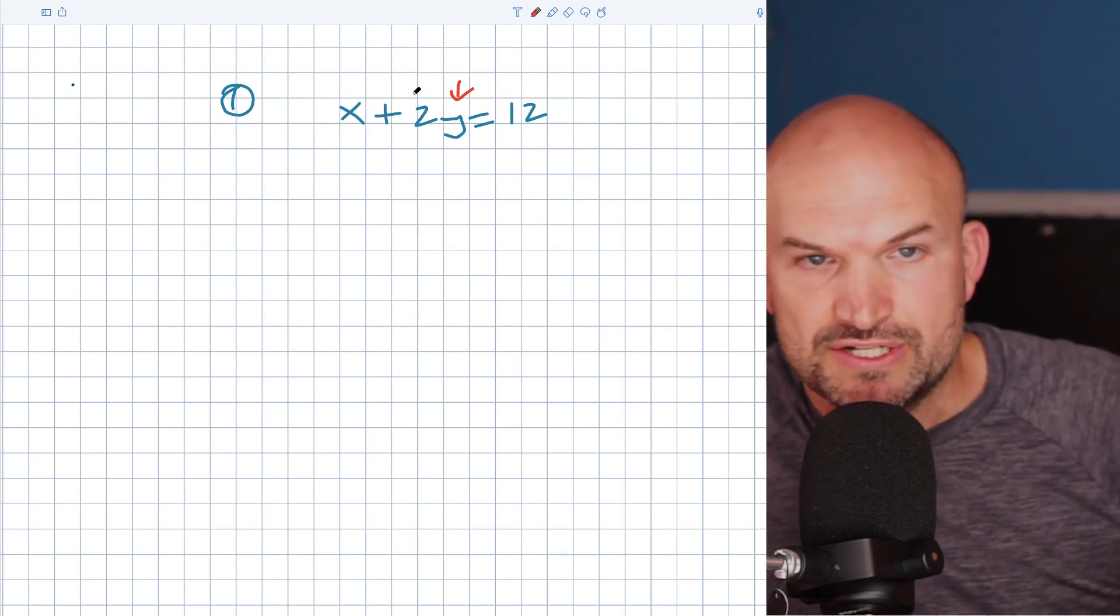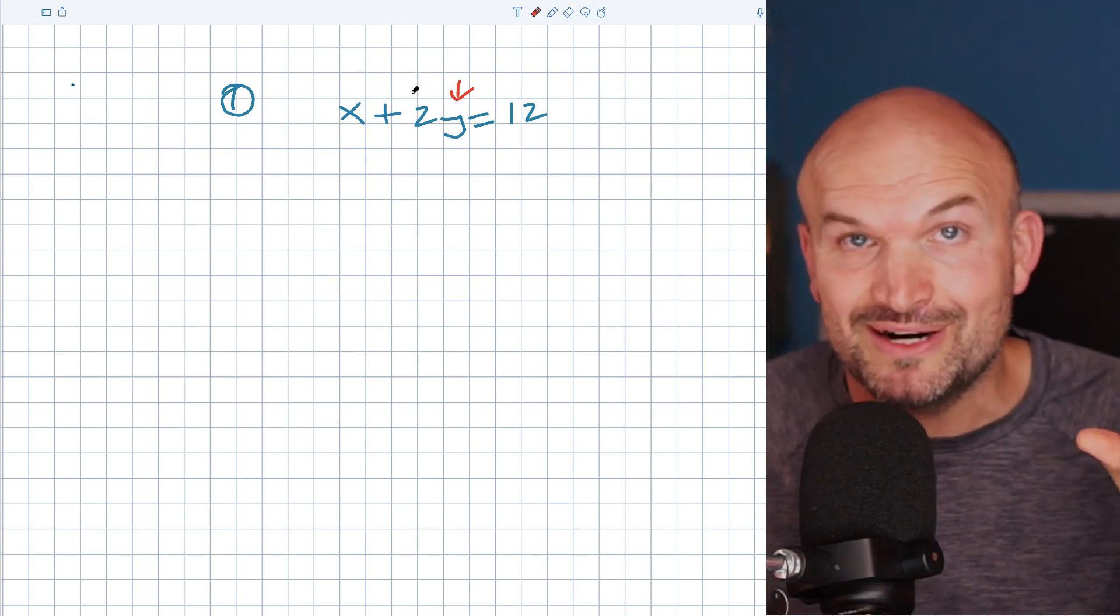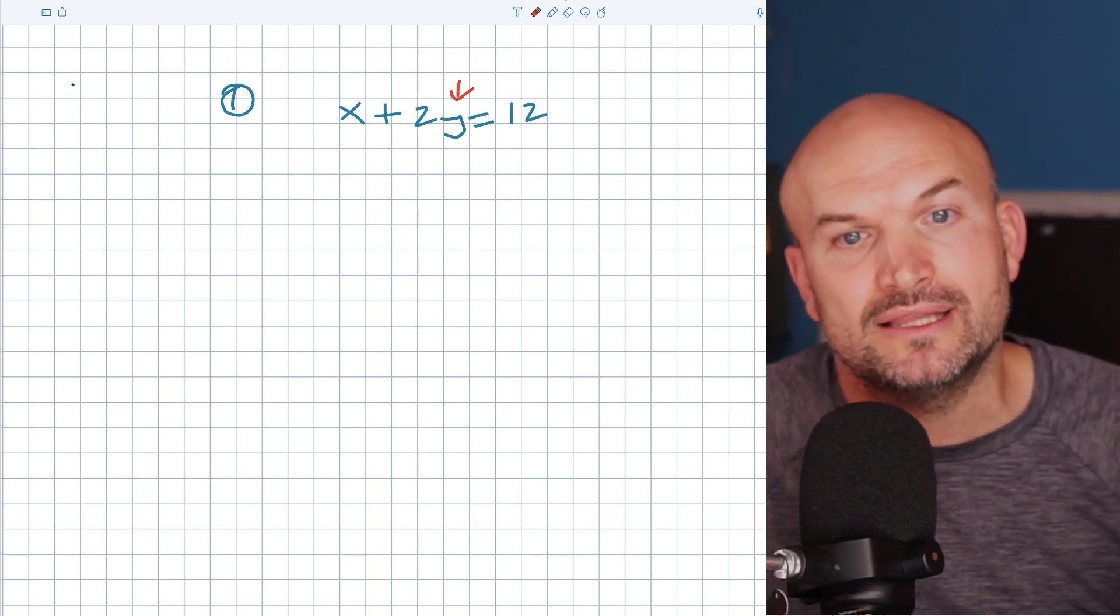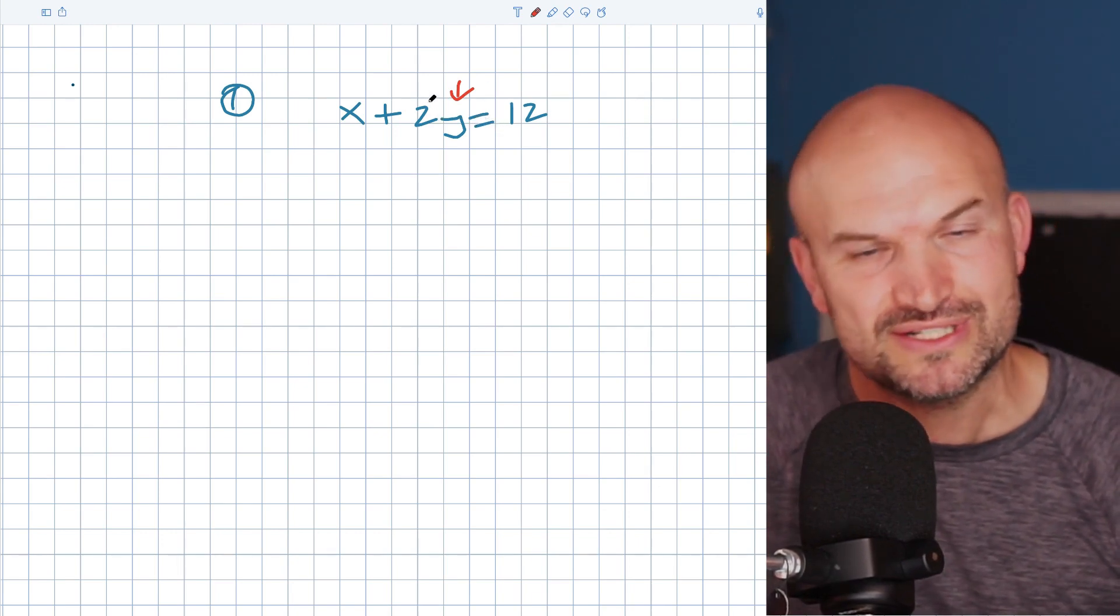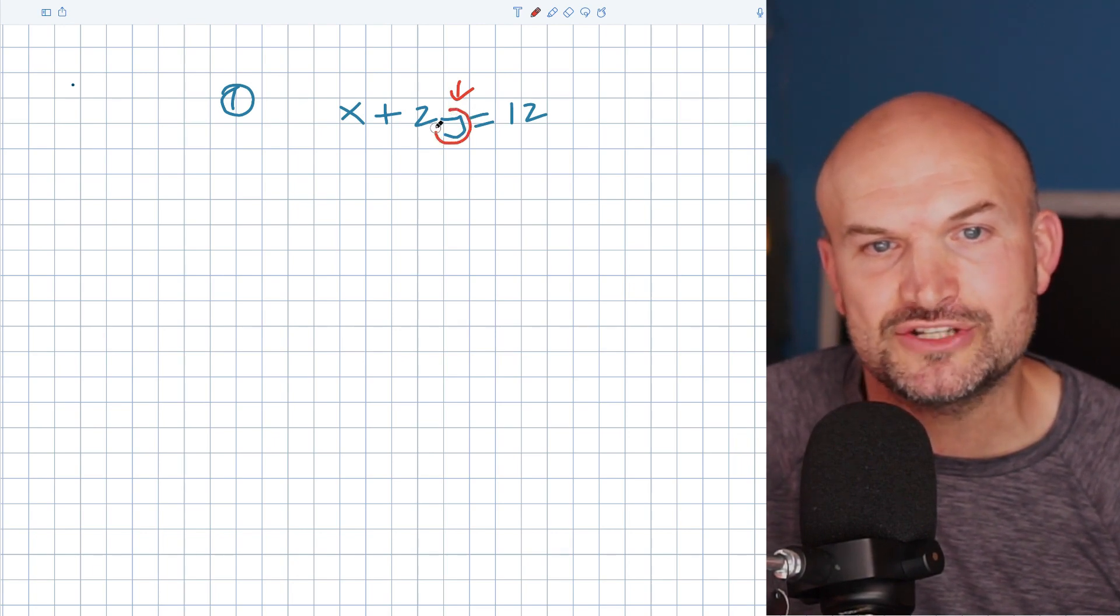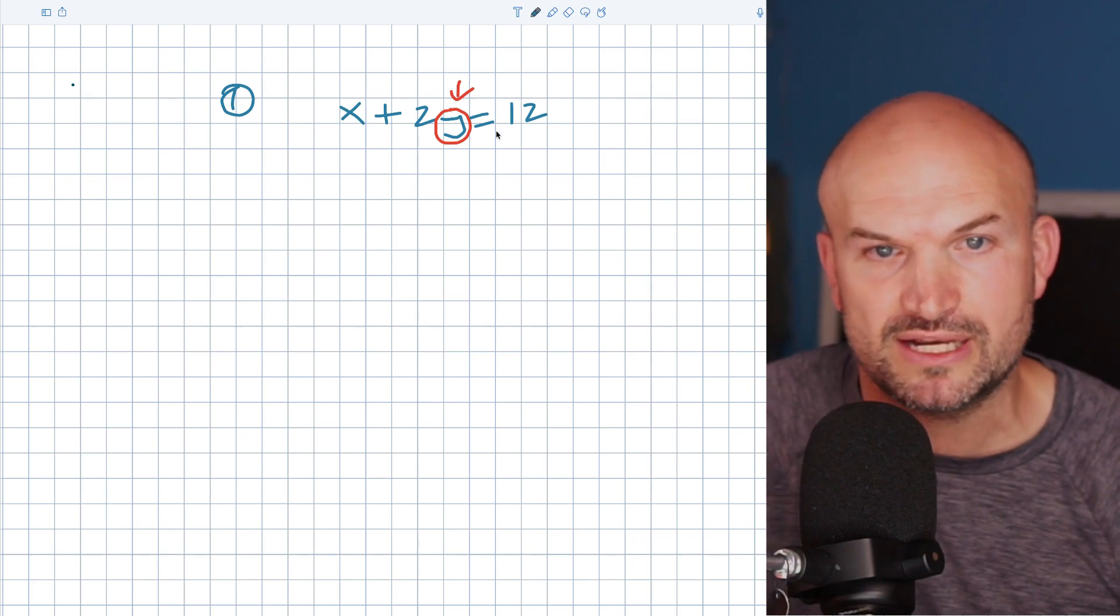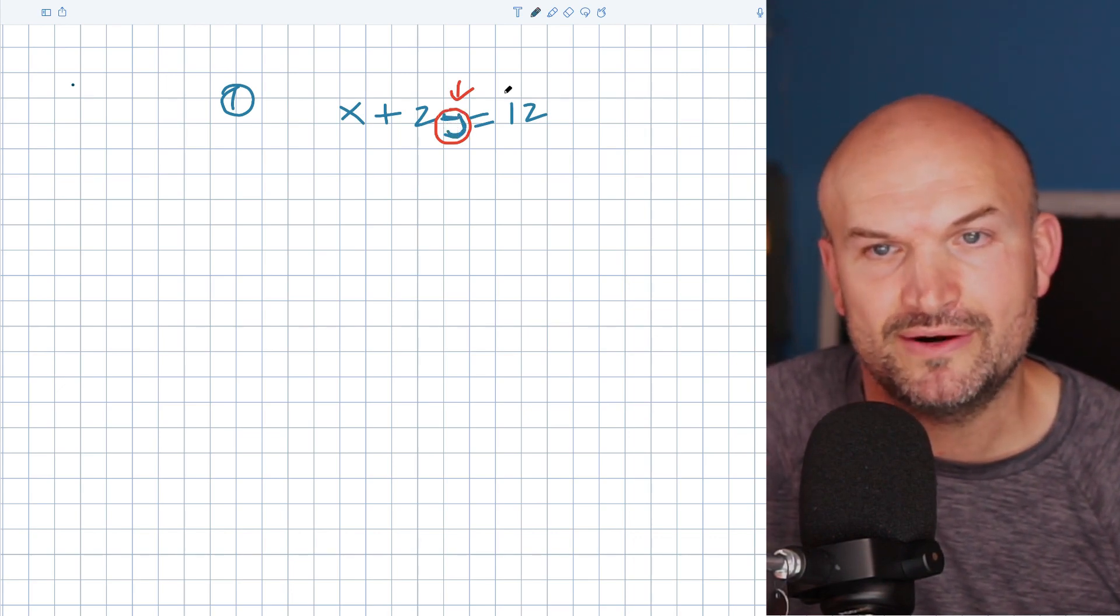Now you remember solving linear equations, right? We're just using our inverse operations and we're solving for usually one variable. And a lot of times it gets tricky when we have more than one variable, which we call a literal equation. So students sometimes forget how do we do things when we have all these variables. So one thing I think is pretty helpful is to go ahead and circle the variable you're trying to solve for. Now, in this case, we're solving for the y.